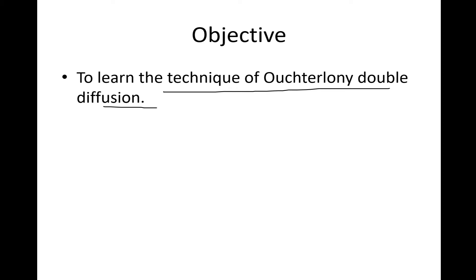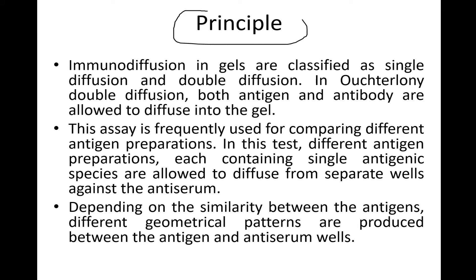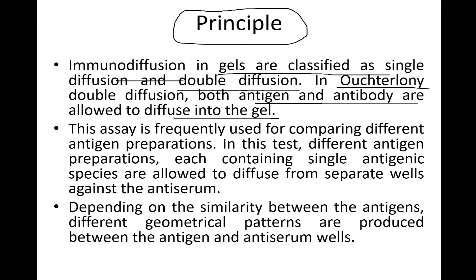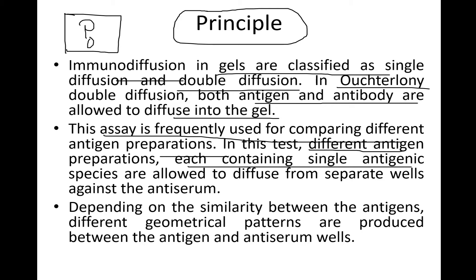Let's talk about the principle first before moving on to the procedures. Immunodiffusion in gels is classified as single diffusion and double diffusion. This is a double diffusion in which both the antigen and antibody are allowed to diffuse into the gel, where they interact with each other in a particular space and time. This assay is frequently used for comparing different antigen preparations, where different antigenic preparations each containing a single antigenic species are allowed to diffuse from separate wells against the antiserum.